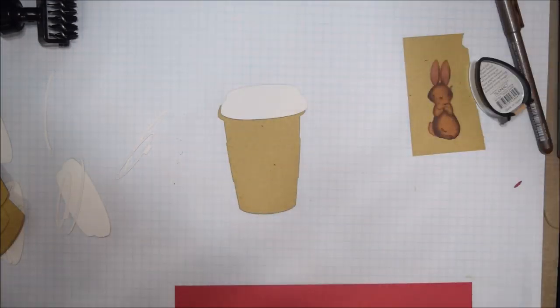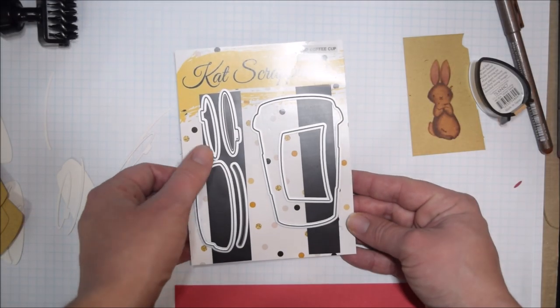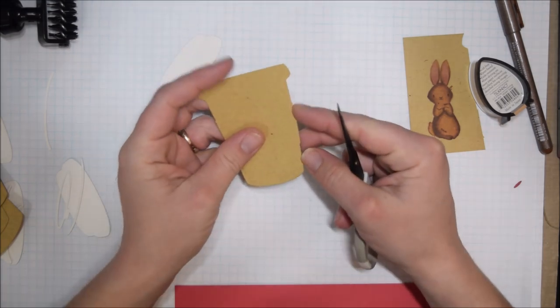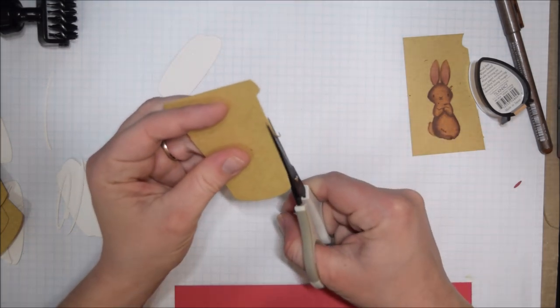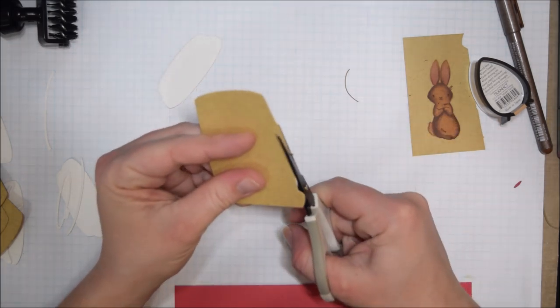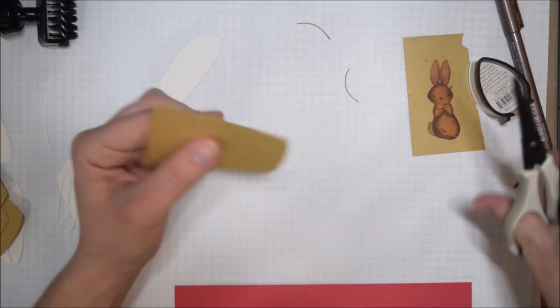I'm using this bunny from the Picket Fence Studios Peach and Piper stamp set, as well as the layered coffee cup die cut from Cat Scrappiness. To get started, the coffee cup does have a sleeve, and the die cut that you layer underneath has these little bump-outs for where the sleeve goes.